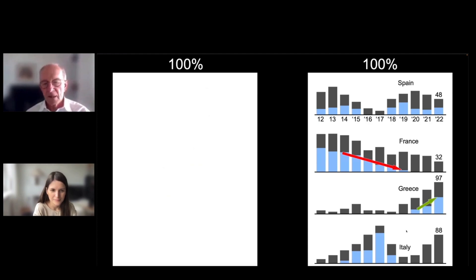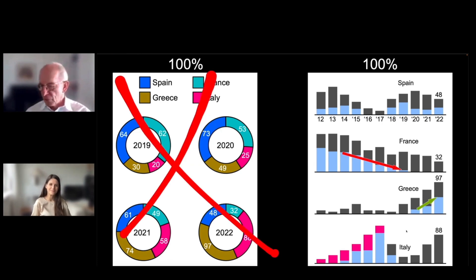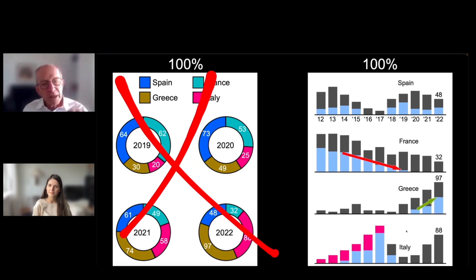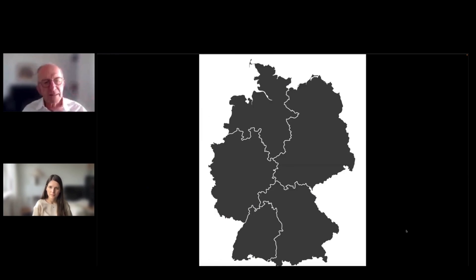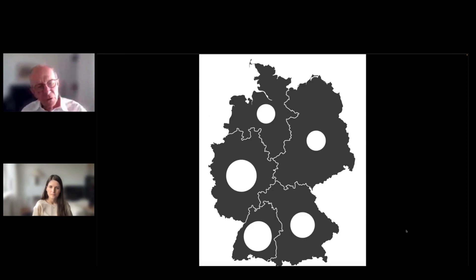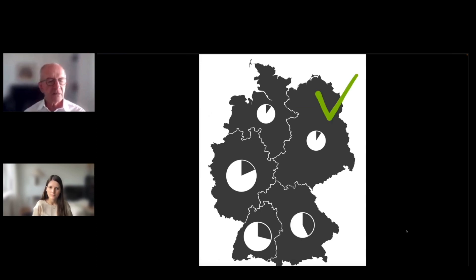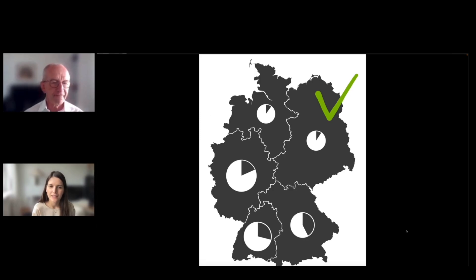Increasing information density, using the same space, showing development over time with stacked developments and trends — this uses the area effectively. We don't need pie charts, except maybe one or two cases. For instance, in maps it's okay to use pies or circles to show different market sizes and shares — but the typical pie charts we see everywhere are absolutely useless.